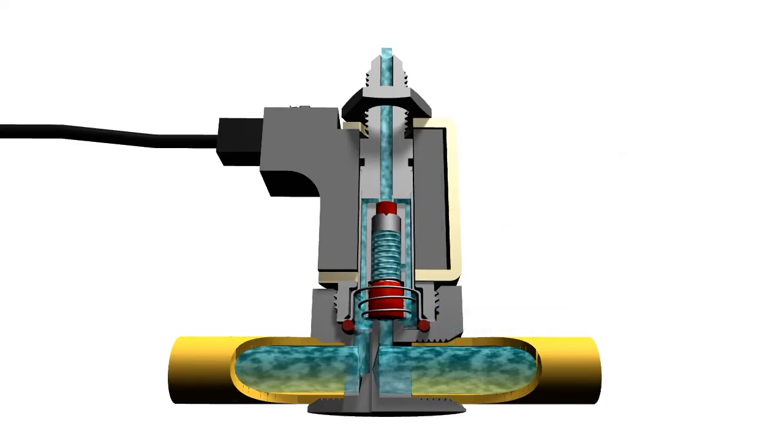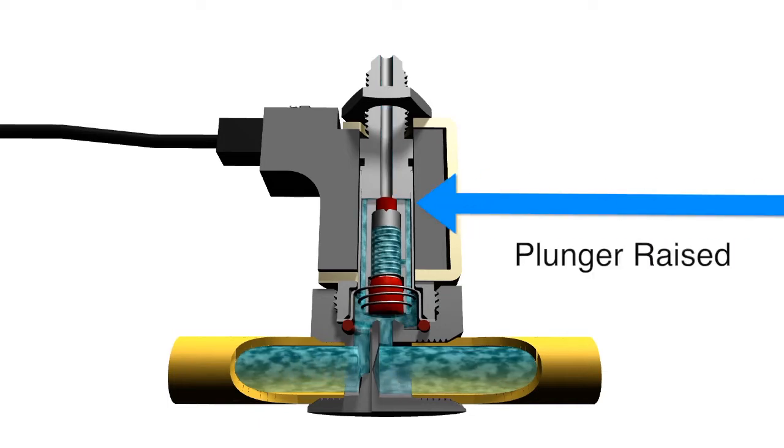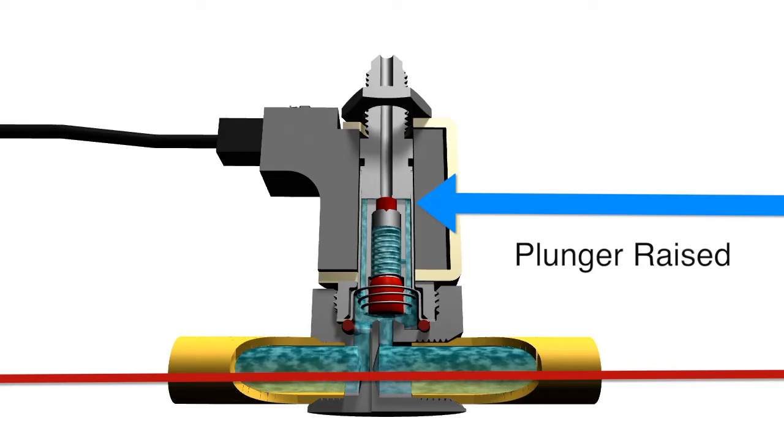Energizing the valve raises or lowers the plunger. Raising the plunger seals off the stop orifice and opens up the body orifice, directing flow through the body of the valve.